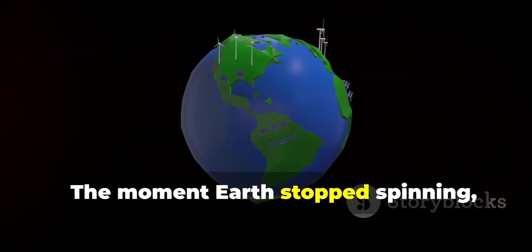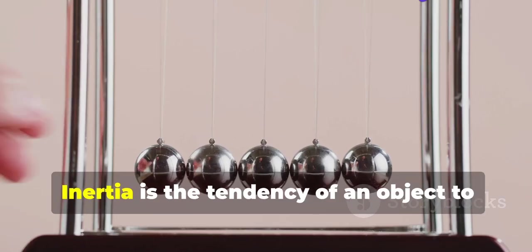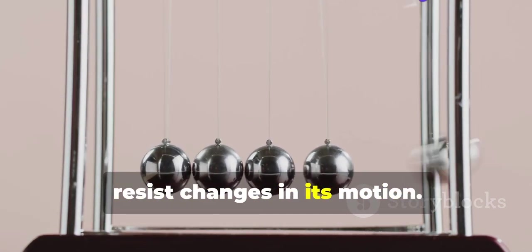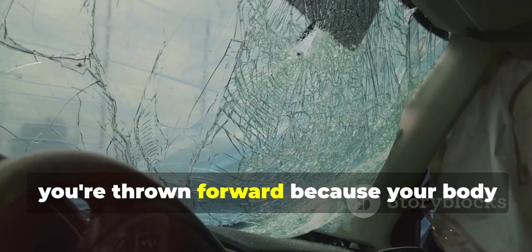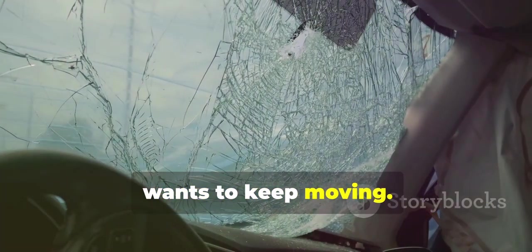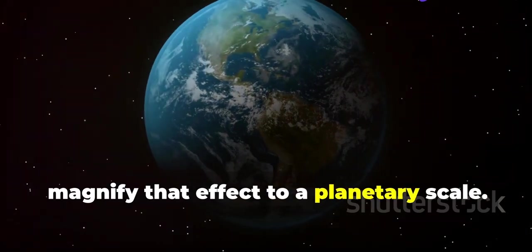The moment Earth stopped spinning, the law of inertia would take over. Inertia is the tendency of an object to resist changes in its motion. When a car suddenly breaks, you're thrown forward because your body wants to keep moving. Now, magnify that effect to a planetary scale.